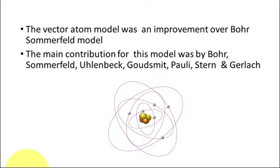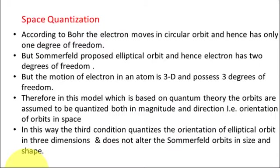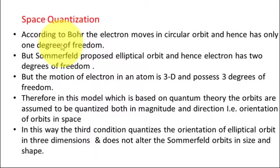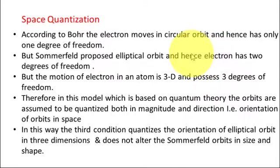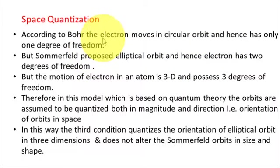How could the vector atom model account for the fine structure of spectral lines? The first main concept is space quantization. According to Bohr, the electron moves only in a circular orbit, and a circle has equal diameters in all directions, so the electron has only one degree of freedom.